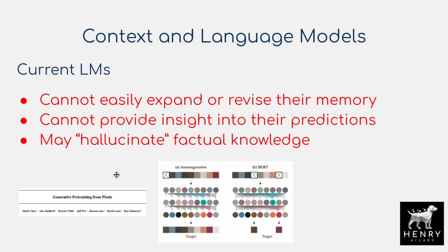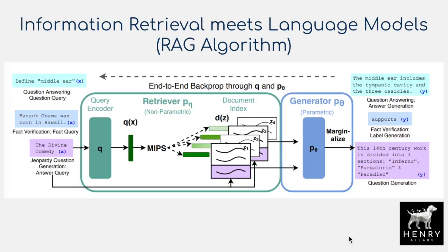The current generation of language models that do not have context have several limitations. You can't easily expand or revise their memory — if you want to change a fact, like event X happened in 1982 compared to 1976, just training on this one example isn't going to permanently change the implicit knowledge stored in the parameters of the neural network without access to any kind of retrieval or context. Additionally, you can't provide insight into their predictions, and the model might hallucinate and generate false factual knowledge.